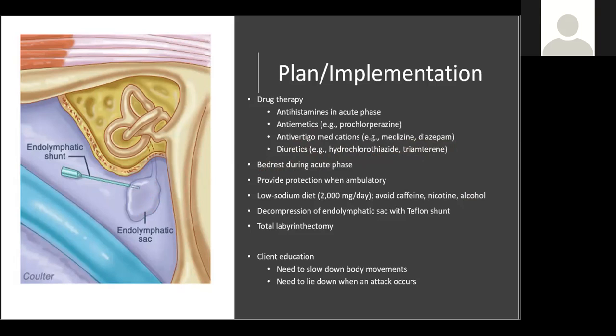In the acute phase, place the client on bed rest and provide protection when moving — for example, walking to the toilet — to ensure client safety, since vertigo can affect ambulation. We can also decompress the endolymphatic sac using a Teflon shunt — a surgical procedure to drain fluid from the distended endolymphatic sac.